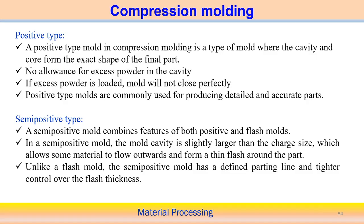The semi-positive type is an intermediate between the positive type and the flash type. Flash is produced in this process, but the quantity is less compared to the flash type. The mold cavity is slightly larger than the charge size, so some material flows outward as flash around the part. The parting line in the semi-positive mold allows control over the flash thickness, which is usually very small.